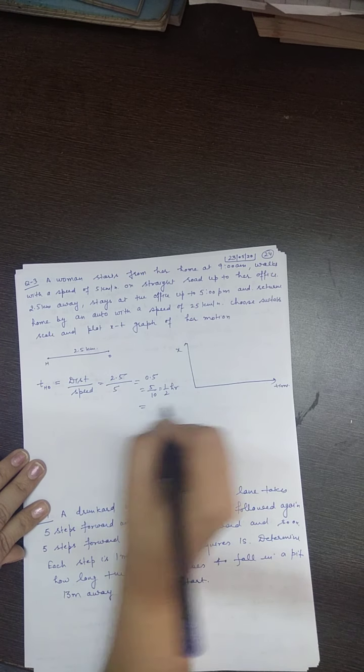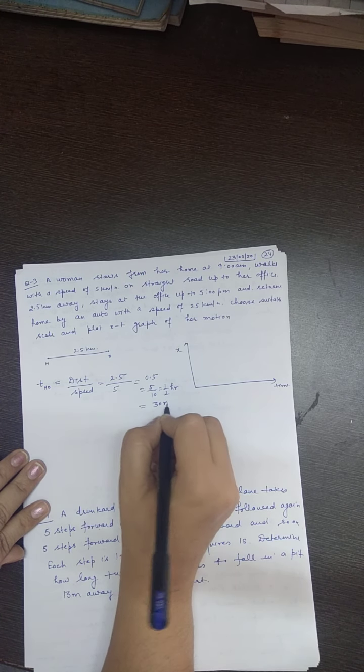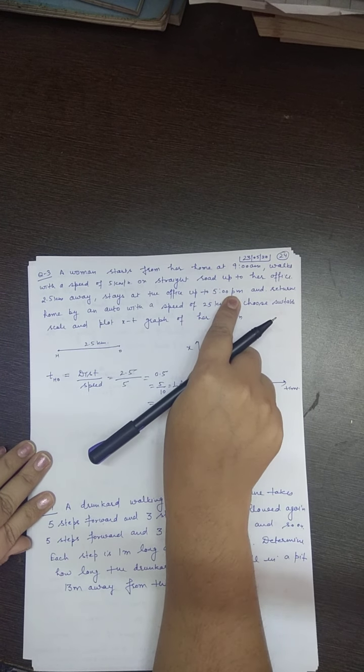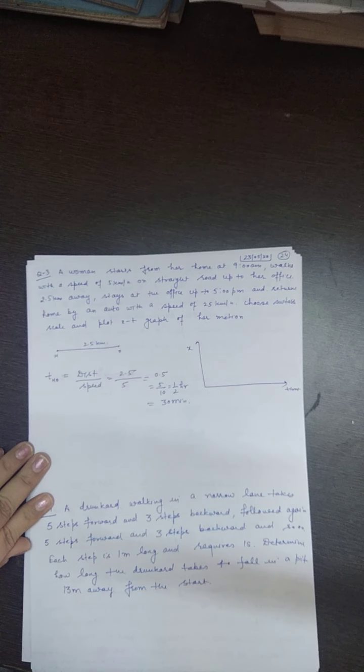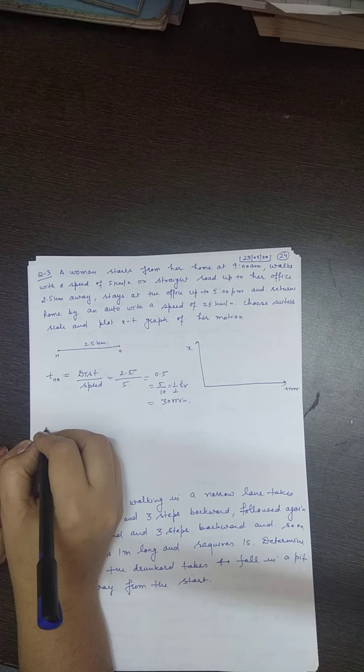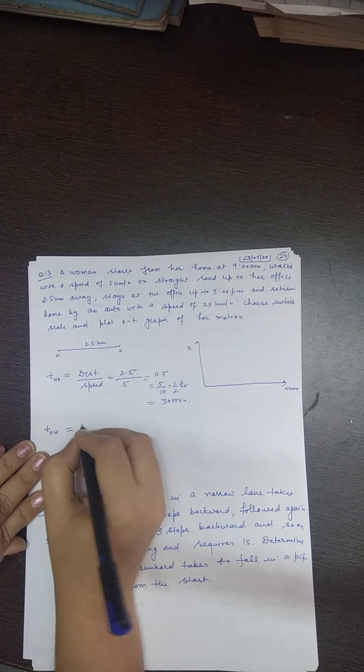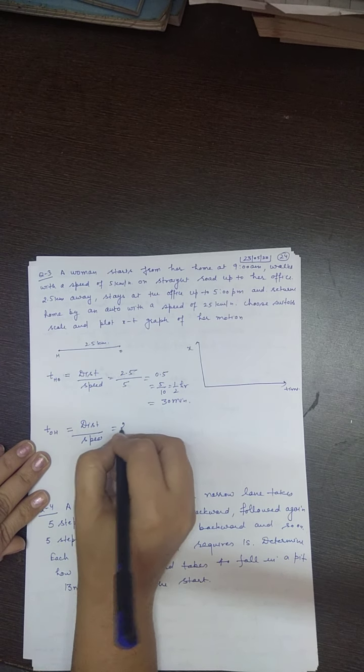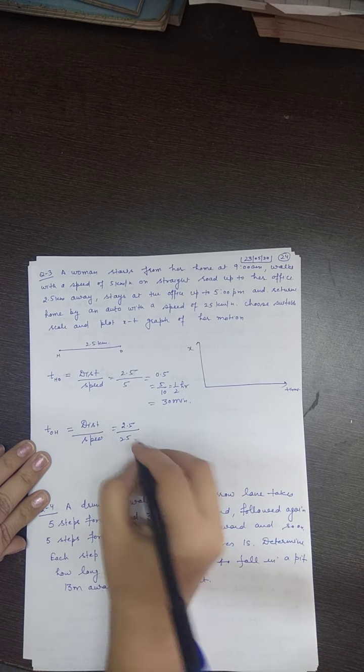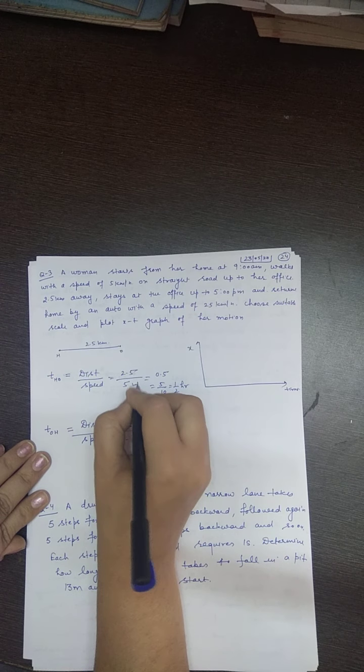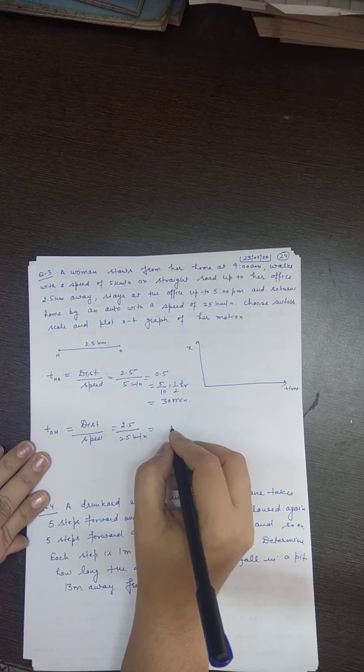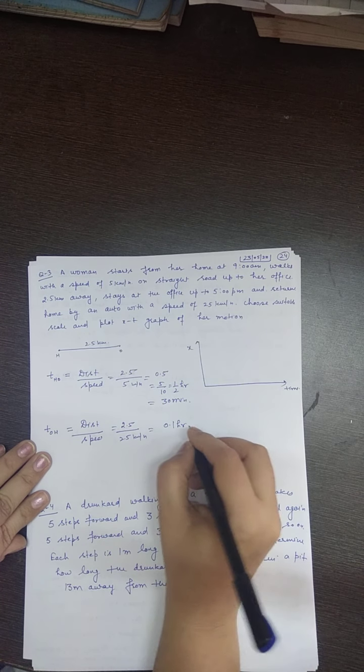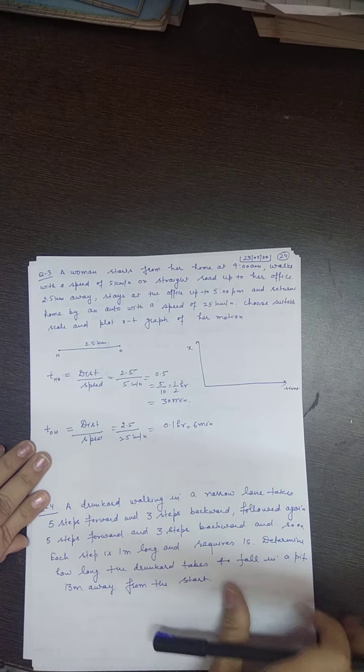After that, she stays at the office up to 5 PM and returns home by an auto with the speed of 25 km per hour. So for the return journey, 2.5 divided by 25 comes out to be 0.1 hour, which is 6 minutes.